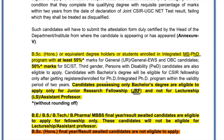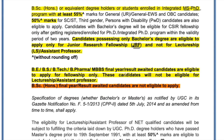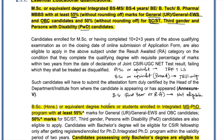BE, BTech, BPharma, and MBBS final year and result-awaited candidates are eligible to apply for fellowship (JRF) only — they are not eligible for lecturership or assistant professor. BSc Honours students who are in final year or whose result is awaited are NOT eligible. So if you are a BSc student in final year with results not yet announced, you cannot apply. You must have your result announced with at least 55%, and even then only for JRF.